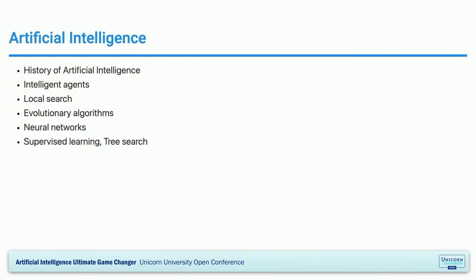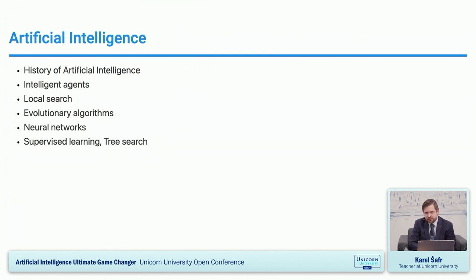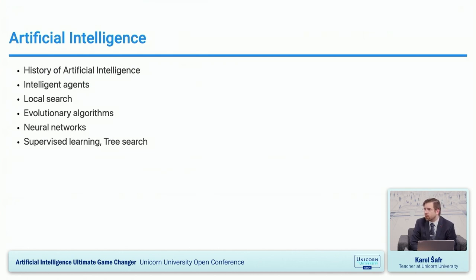The first AI course is at bachelor degree level, called simply Artificial Intelligence. This course maps the history of artificial intelligence, introduces students to what an agent is, what intelligent agents are, what intelligence means, and the key concepts of AI. It is taught within the bachelor program and covers the general foundations of artificial intelligence. By completing this course, students gain a general overview of the tools and methods used in AI — something like the basic 101 course.